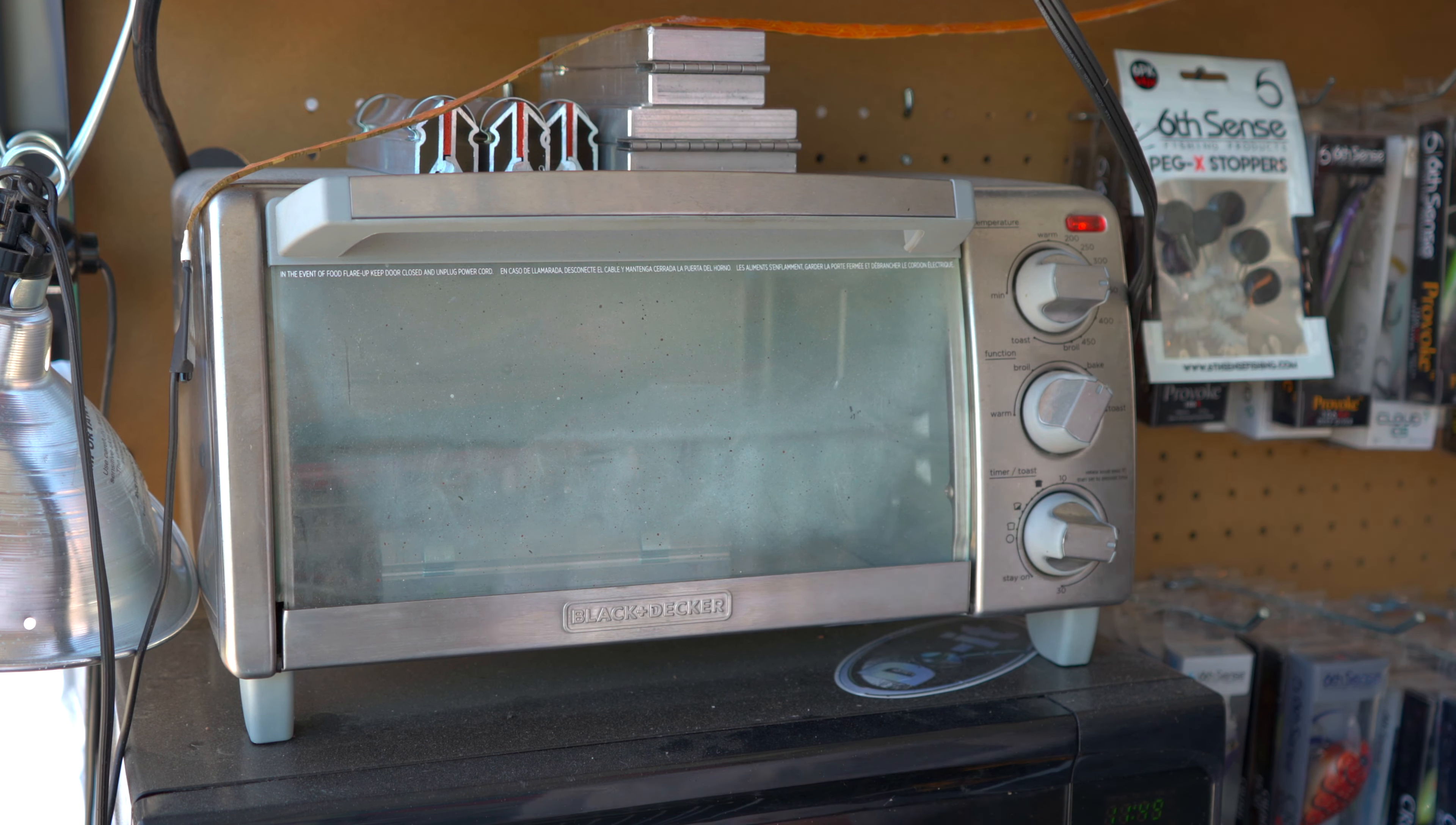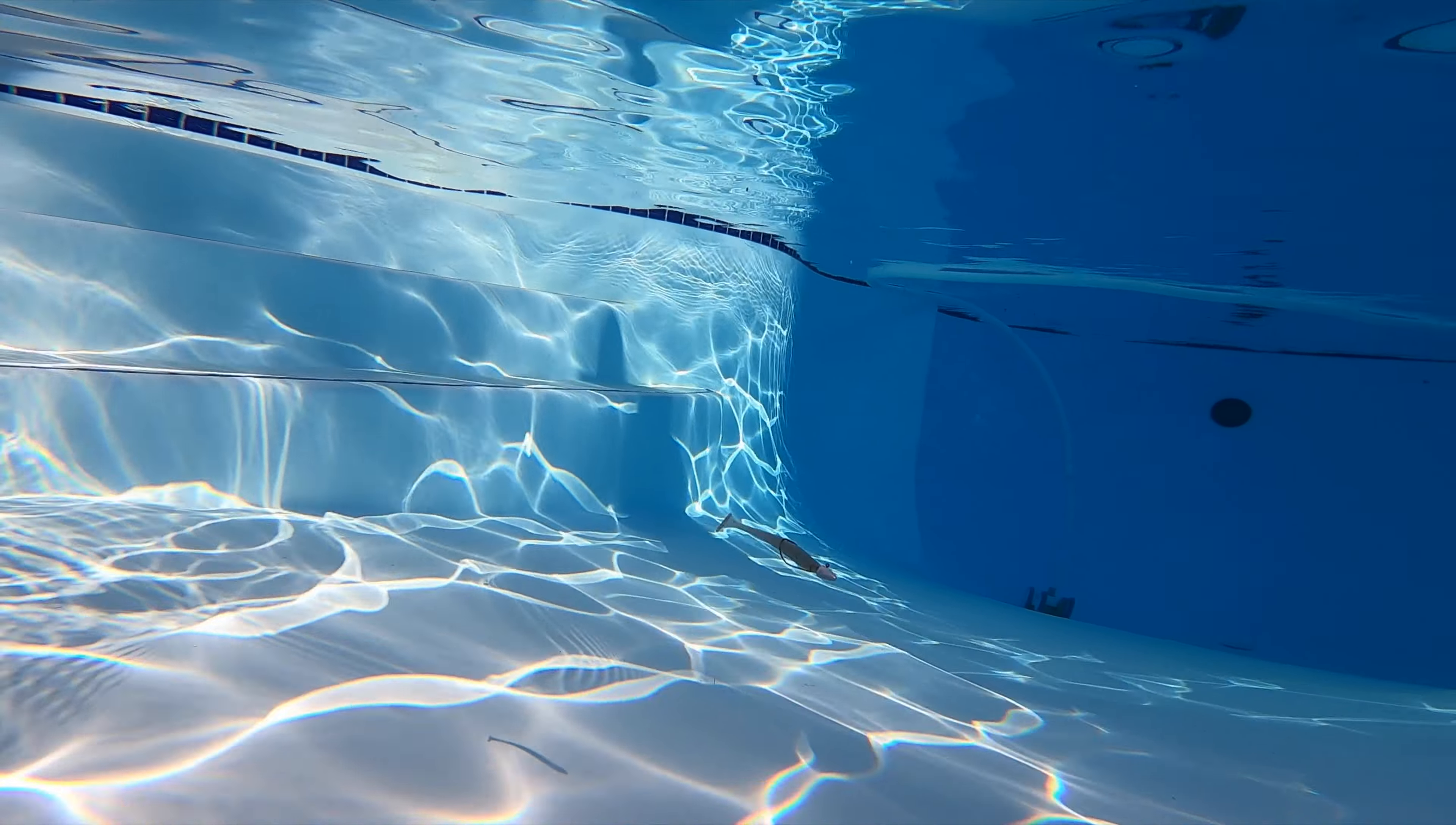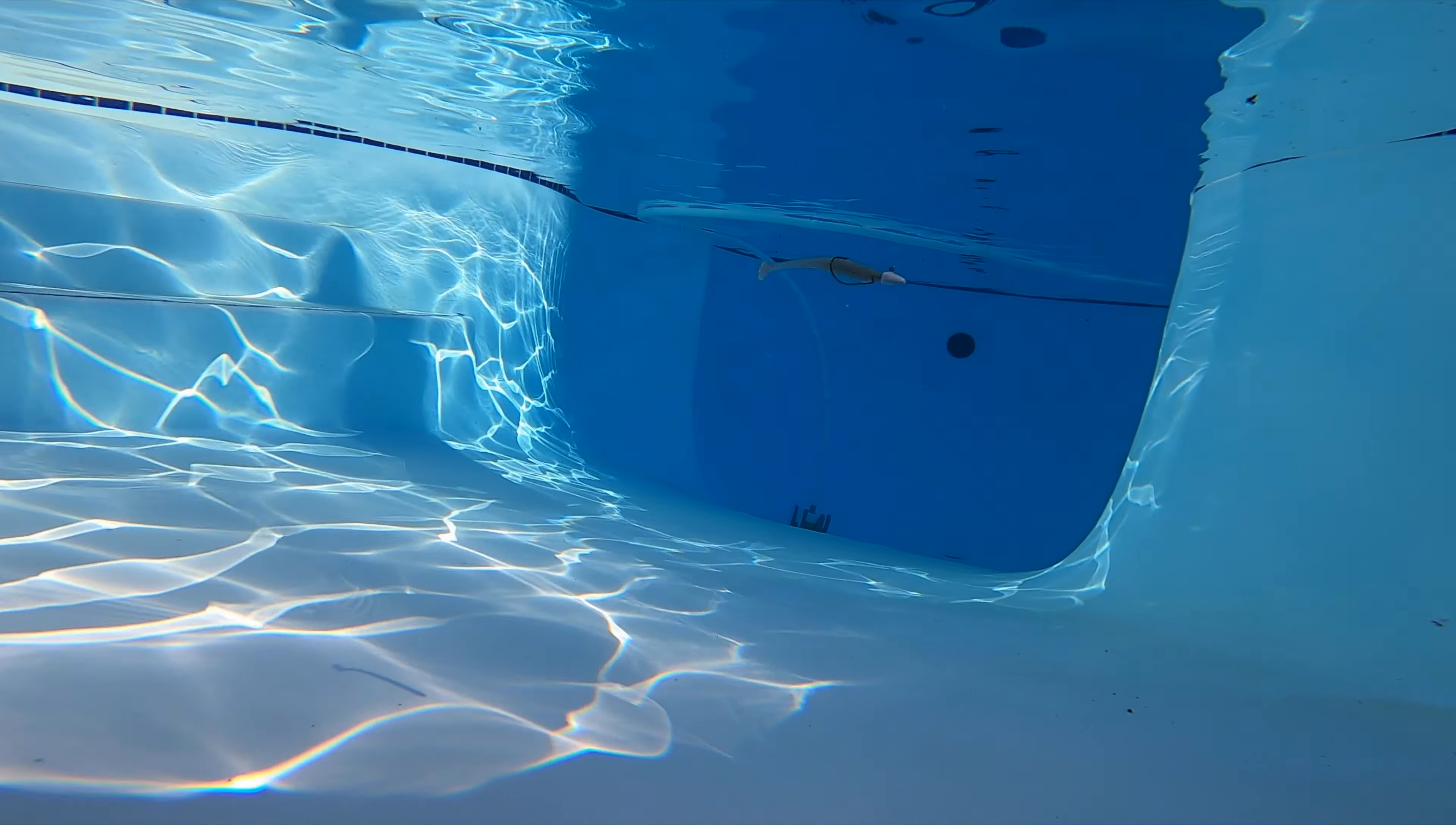This Duo Molds weedless darter jig is going to be able to go into places that you haven't been able to fish before. Pairs up perfectly, as you can see with that Duo Molds slick shiner. You can pair it up with a swim bait. You can pair it up with a worm. You can pair it up with a creature bait. You can do a lot of different things with this weedless darter jig.